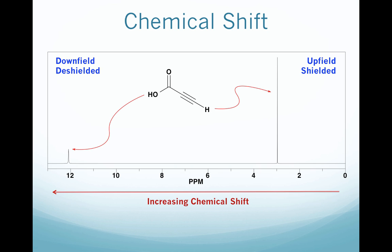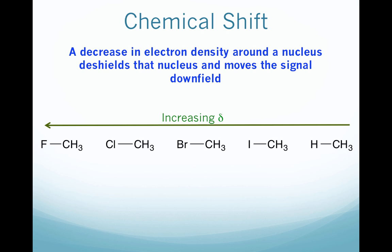The next thing we're going to look at is the chemical shift, or where exactly on the NMR spectrum between 0 and 13 parts per million a particular proton shows up. We've already looked at a compound and saw that the carboxylic acid proton is really far downfield while the alkyne proton is pretty far upfield. Now we're going to look at some of the factors that influence the chemical shifts of particular protons.